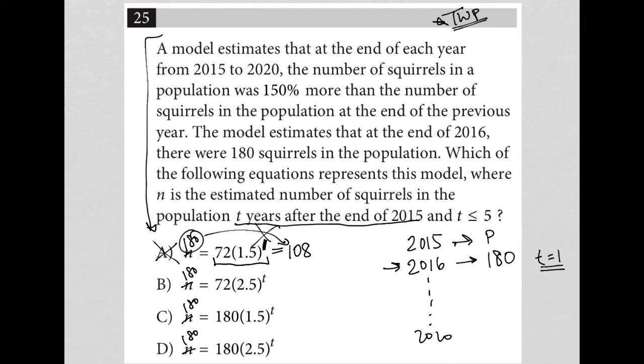How about choice B? Is it true that when I replace T with one, that 2.5 to the first power is just 2.5 and then 72 times 2.5? Oh, in my calculator, that actually is 180. So B must be the correct answer here.